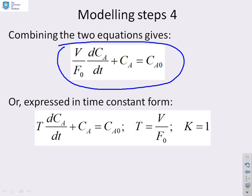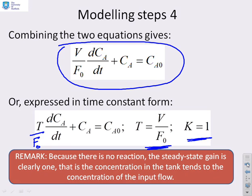The model is already in time constant form with T = V/F0 and K = 1. Because there's no reaction in this tank, the steady-state gain has to be one — the concentration in the tank must tend to the same concentration as the input flow eventually, since there's no reason for any other outcome. This is intuitive common sense, and it gives you confidence that you've got the gain you expected.